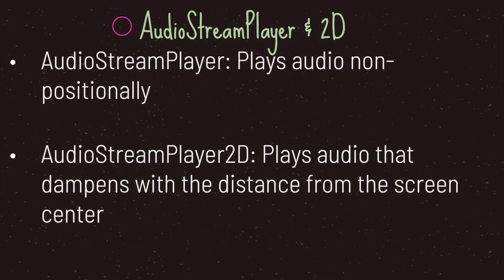Hello and welcome to another episode in the Godot Basics tutorial series. In this episode we will be taking a look at the AudioStreamPlayer class. When it comes to 2D there are two different types of audio stream players: the original AudioStreamPlayer, which plays audio non-positionally, and AudioStreamPlayer2D, which plays audio that dampens with distance from the screen center based on the position of your AudioStreamPlayer2D node.